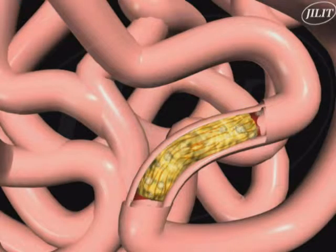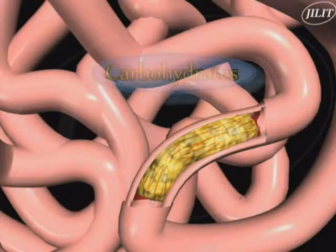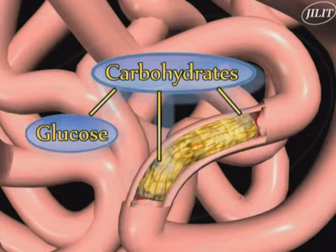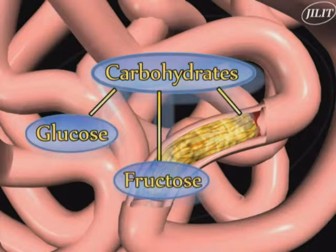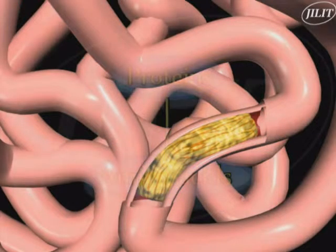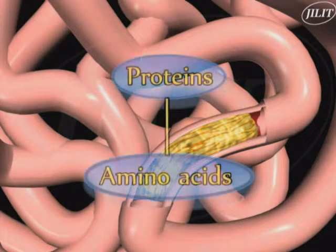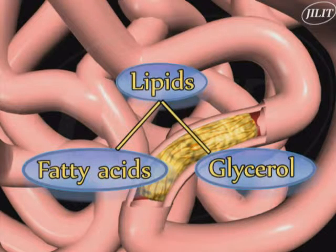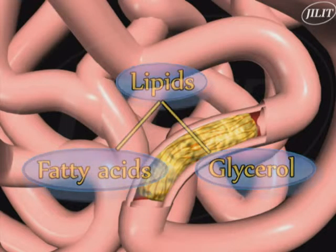At the end of the digestive process, all carbohydrates are digested into the monosaccharides glucose, fructose, and galactose. Proteins are digested into amino acids, and lipids into fatty acids and glycerol.